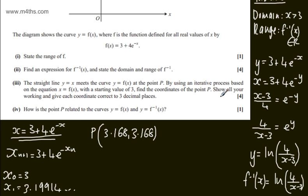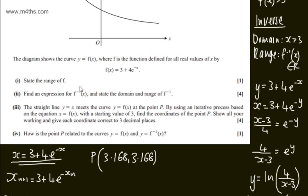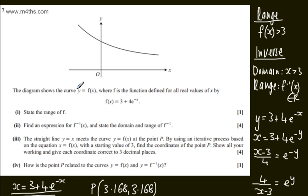In the fourth part for one mark, it says how is the point P related to the curves y equals f of x and y equals f to the minus 1 of x. It's the point of intersection. All we're going to do is write that down: point of intersection.